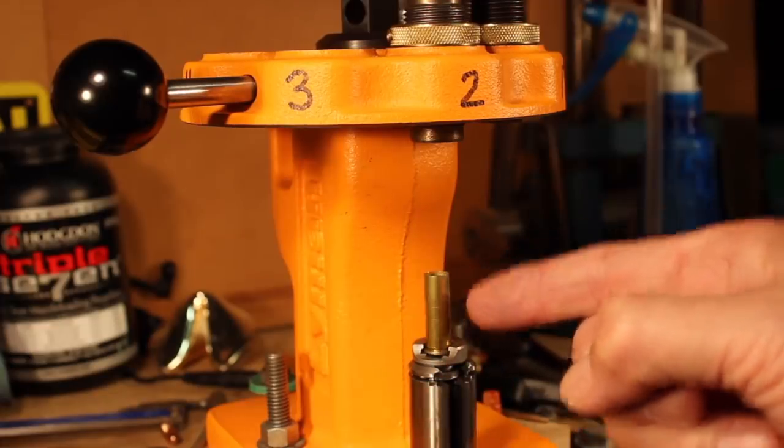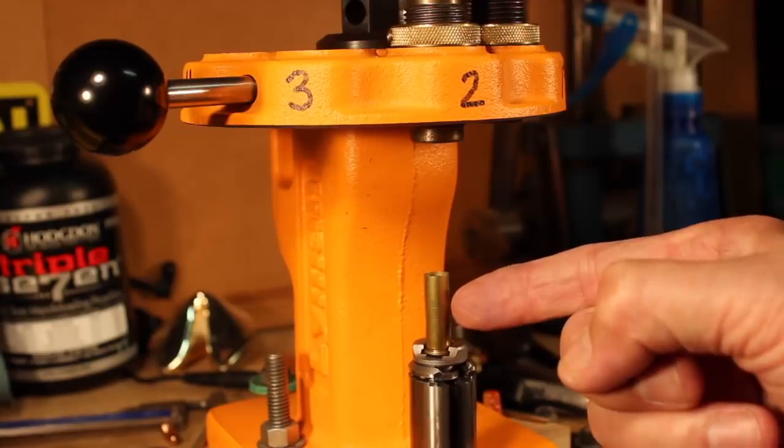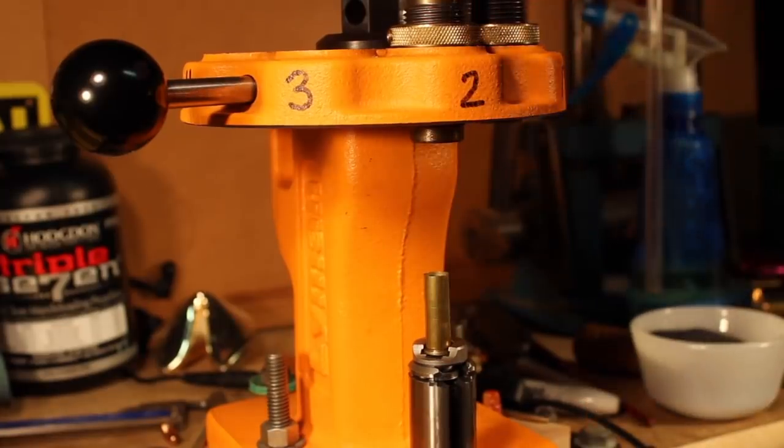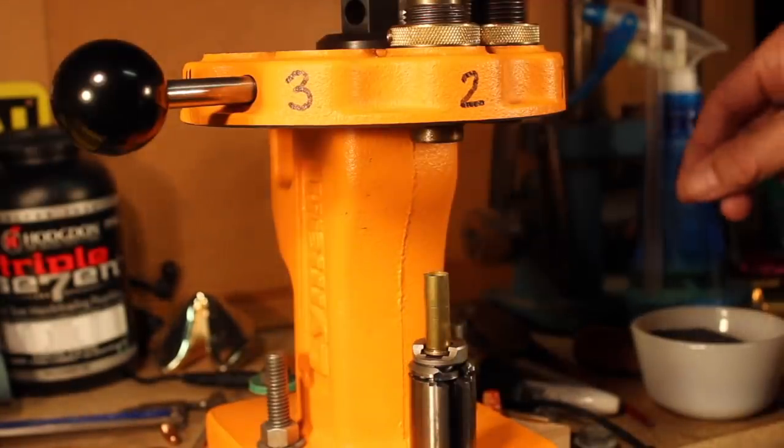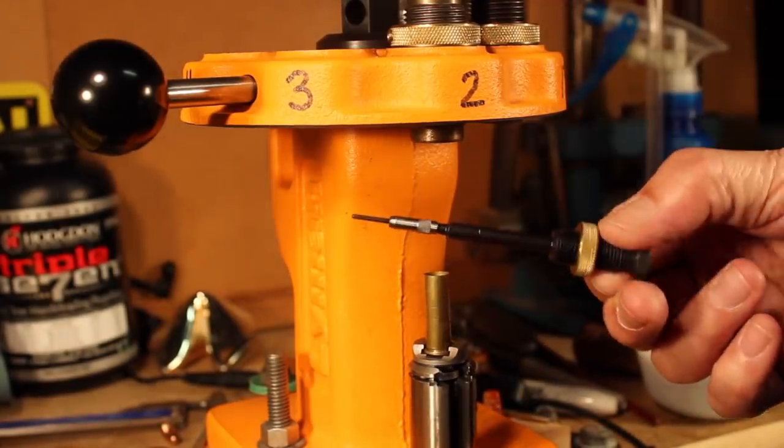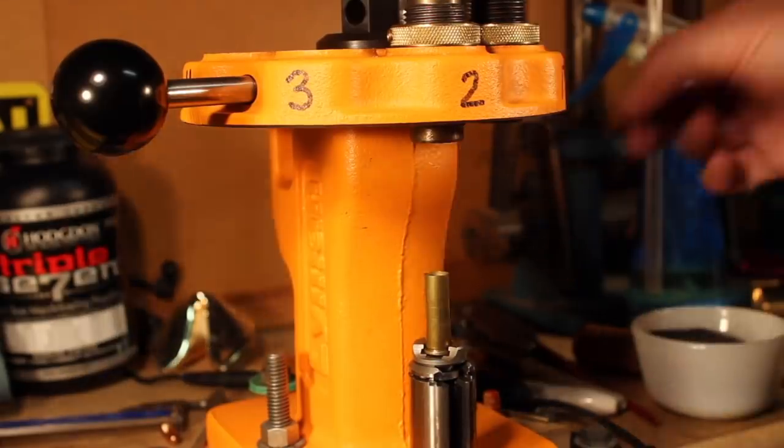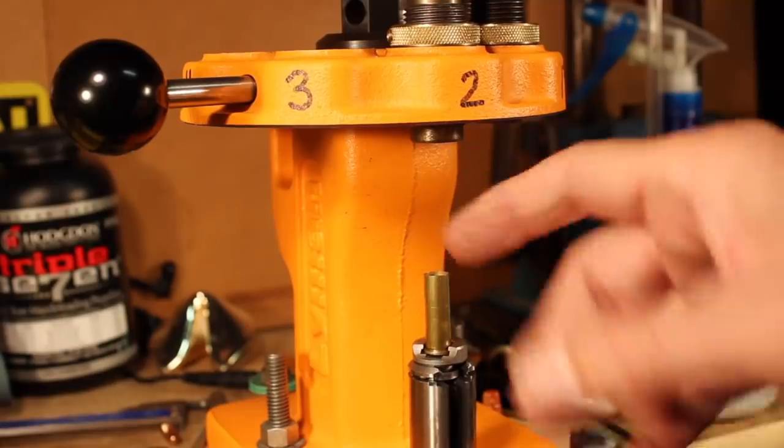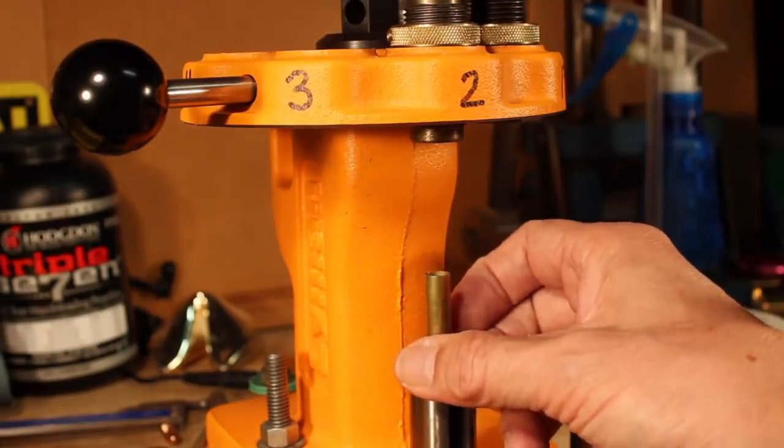To make those wads we take a .38 special case and your squeezer die with a little punch taken out of it. This is the punch. This is what punches the dead primer out. We take that out of the die here. And then that allows us to punch out these wads.